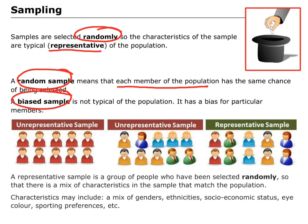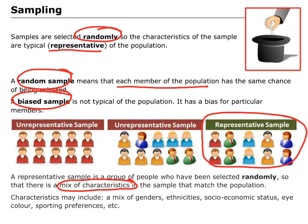If we have a random sample, then our sample is usually going to be representative of the population. A representative sample means we have a mixture of characteristics — for example, males and females, young children, teenagers, middle-aged people, and elderly people, people with different income levels, different sizes of houses, different cultures and languages. All the things that make us who we are. As shown in the picture, a representative sample has a complete mixture of people.